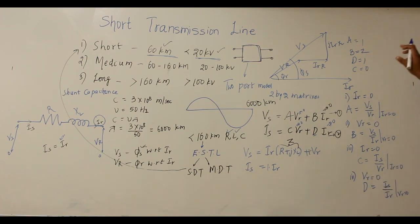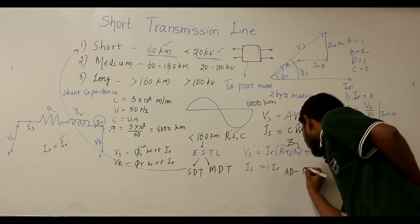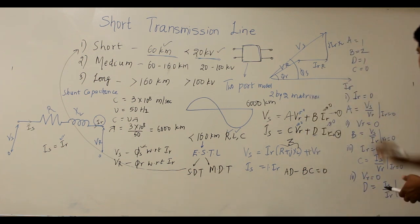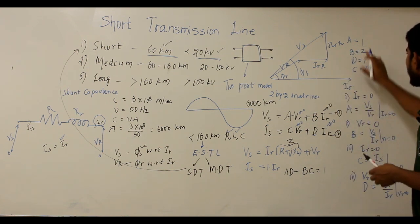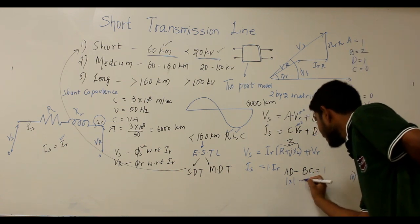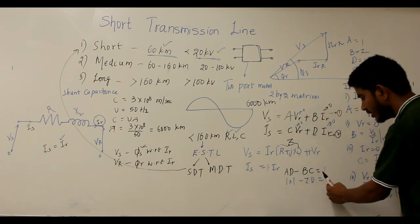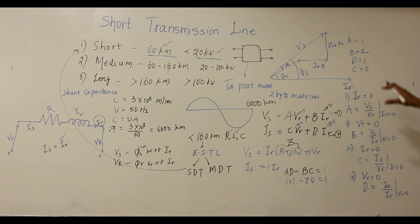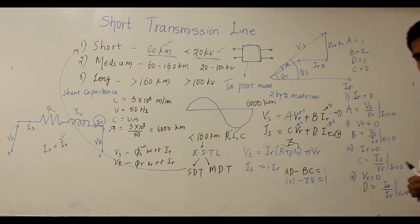To verify the ABCD constants are correct, for passive networks the condition is AD − BC = 1. Substituting: A·D − B·C = 1×1 − Z×0 = 1 − 0 = 1. The condition is satisfied, confirming that the ABCD parameters for the short transmission line are correct.